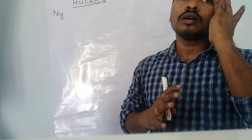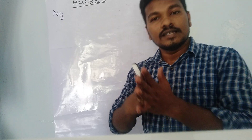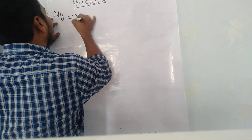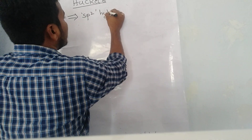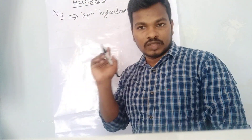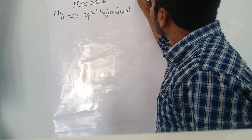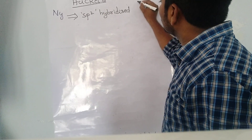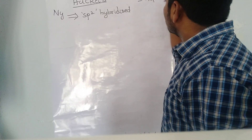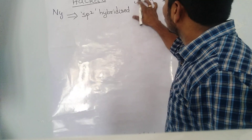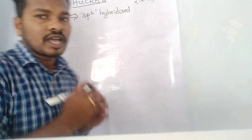The first rule to identify an aromatic compound is that it should contain sp2 hybridized carbon atoms. To identify hybridization: a carbon-carbon triple bond is sp hybridization, a carbon-carbon double bond is sp2 hybridization, and a carbon-carbon single bond is sp3 hybridization. So the first rule is the compound should have sp2 hybridized carbons, meaning carbon-carbon double bonds should be present.